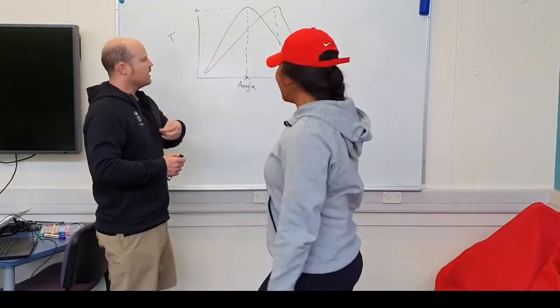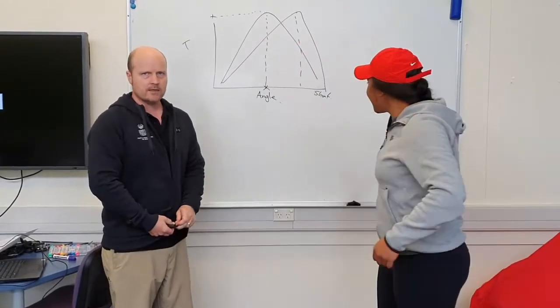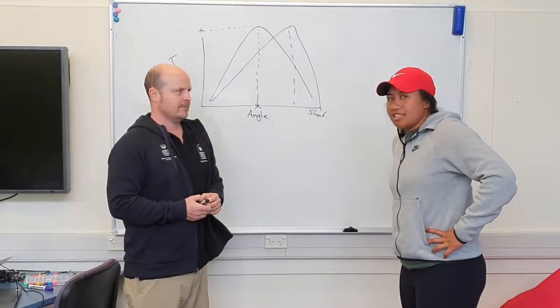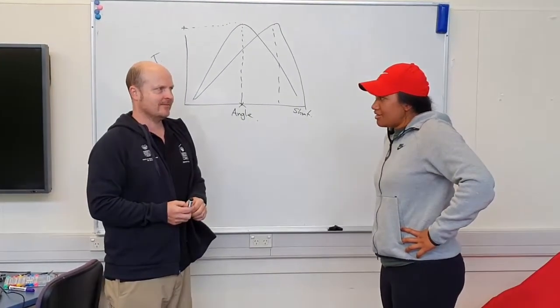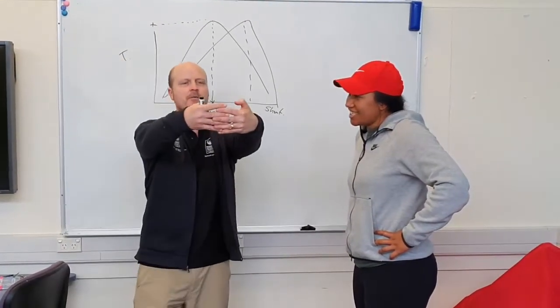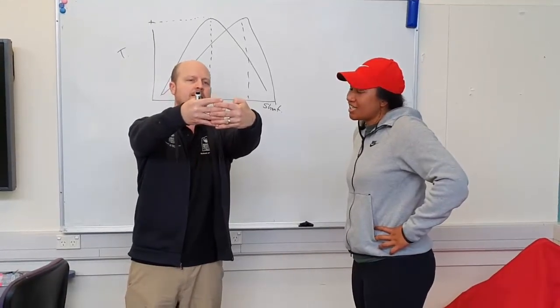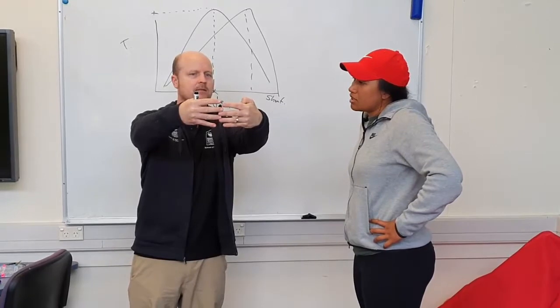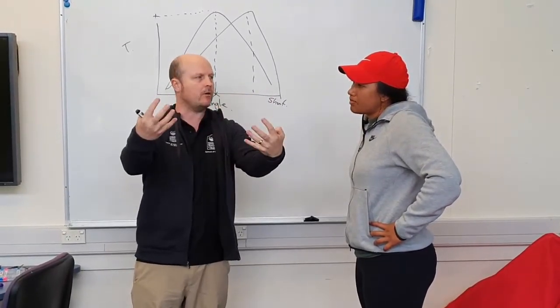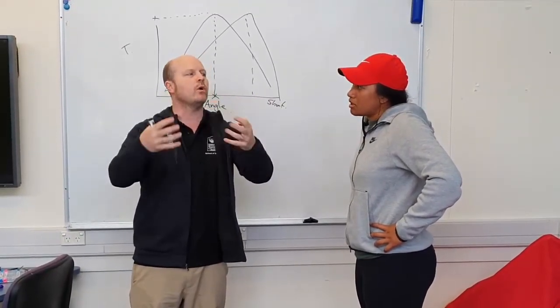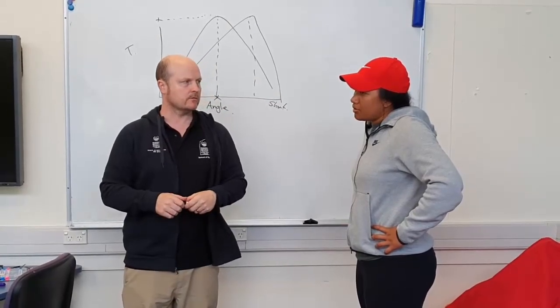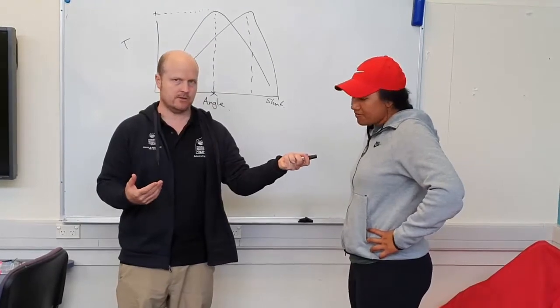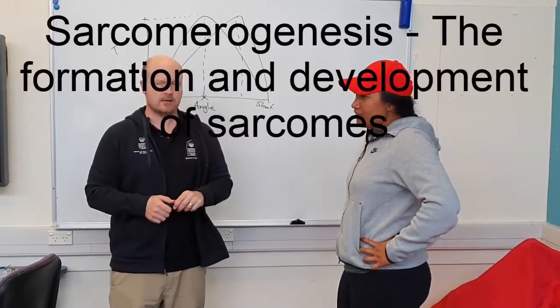So when we do eccentric training, what happens? There's a sarcomere. So as we eccentrically lengthen, the sarcomere gets pulled apart and some of our sarcomeres will pop. And then what does our body do? We're going to create more sarcomeres. And what's that called? Sarcomereogenesis.